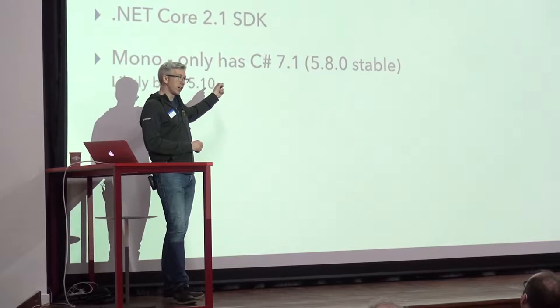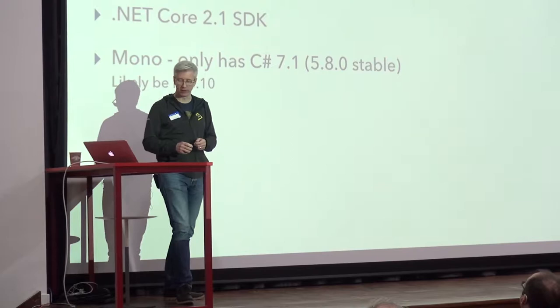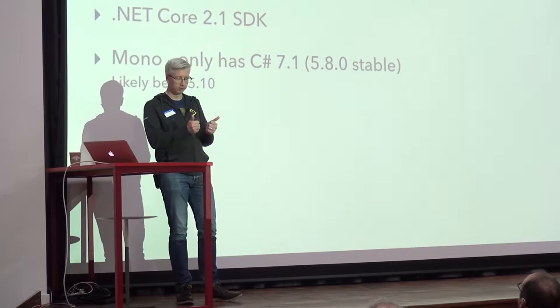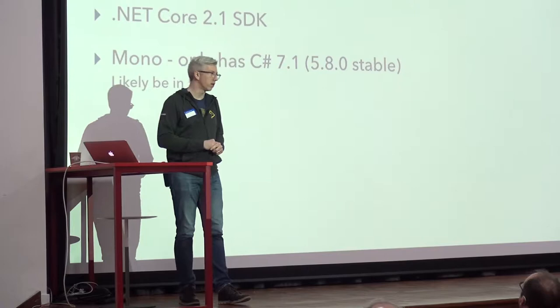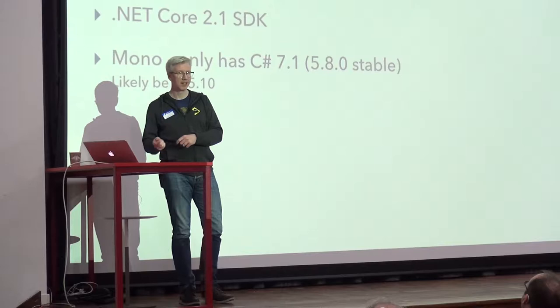You can target .NET Core 2.0 with C# 7.2, which is good. If you are cross-platform and using Mono, you can currently only get C# 7.1. The latest stable release, Mono 5.8, includes C# 7.1. There are too many points now, aren't there? The next version, 5.10, will have C# 7.2.